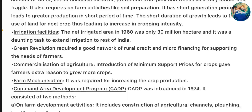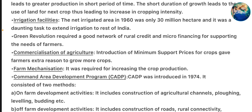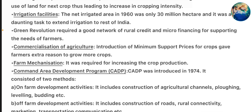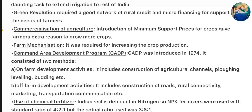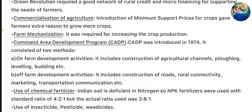Irrigation Facilities: The net irrigated area in 1960 was only 30 million hectares, and it was a daunting task to extend irrigation to the rest of India. Green Revolution required a great network of rural credit and micro-financing for supporting the needs of farmers. Commercialization of Agriculture: Introduction of minimum support prices for crops gave farmers extra reason to grow more crops. Farm Mechanization was required for increasing crop production.